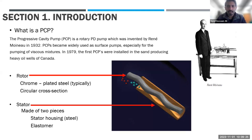It wasn't until 1979 when PCPs actually found their application as a pumping system in the oil and gas sector. They first started in heavy oil wells in Canada because heavy oil is very difficult to move — it has an API range less than 18, making it very thick and viscous. Conventional artificial lift methods like plunger lift, rod lift, ESPs, and gas lift were not very good at moving that thick, viscous fluid. So in 1979, PCPs were deployed as a means of moving that fluid to the surface, and since then have been very commonly used in heavy oil applications, tar sands, and medium oil applications ranging between 18 to 30 API.